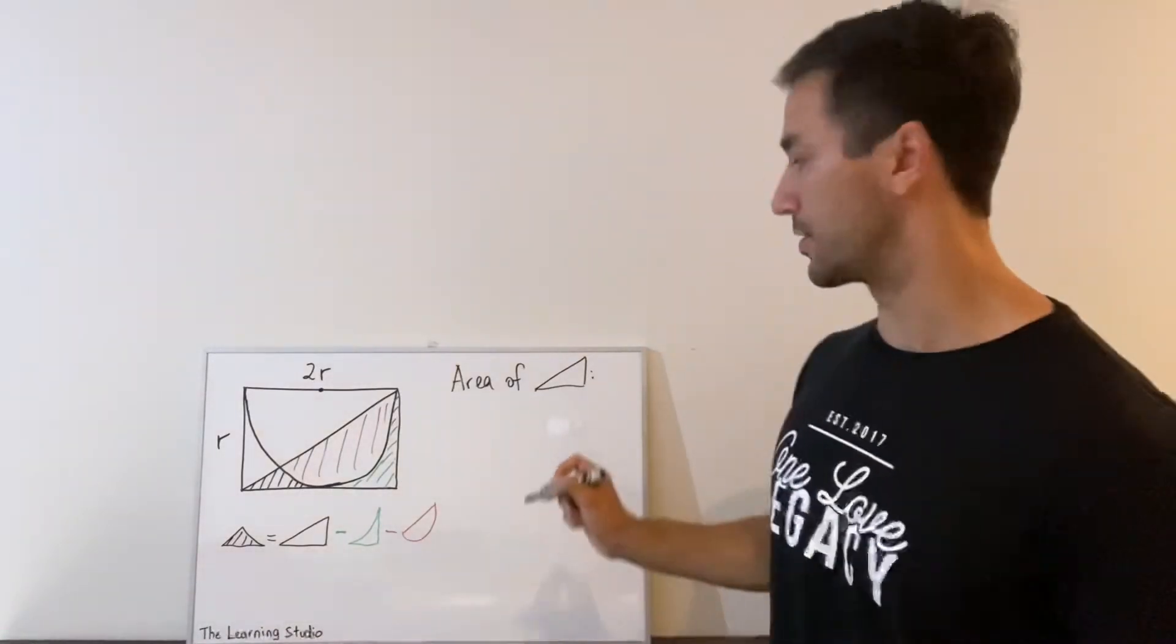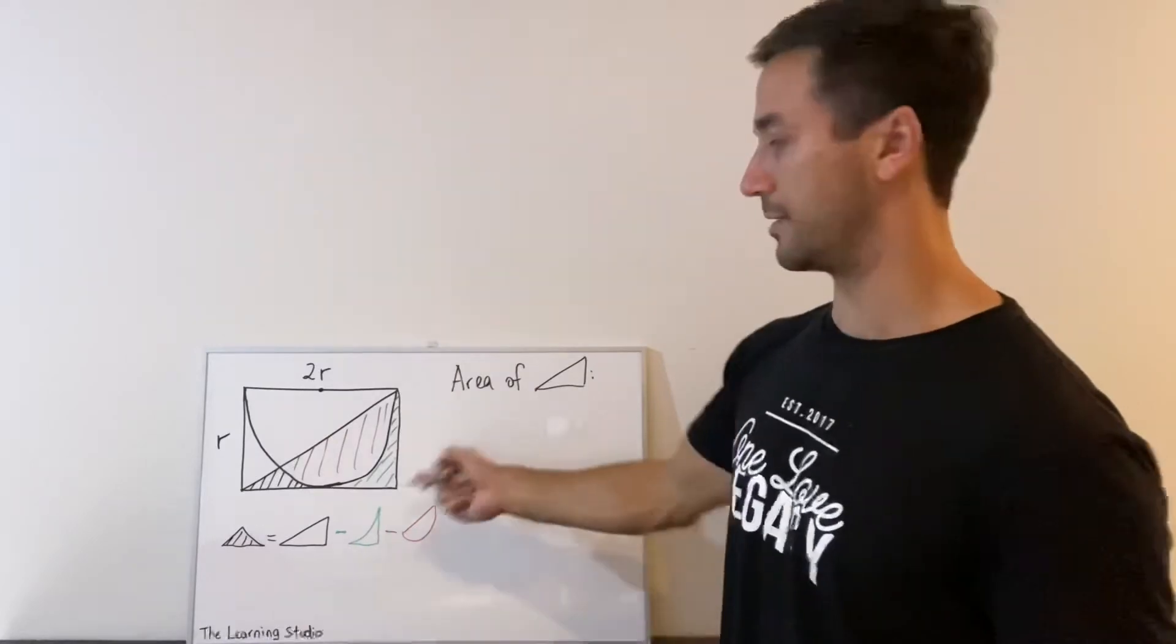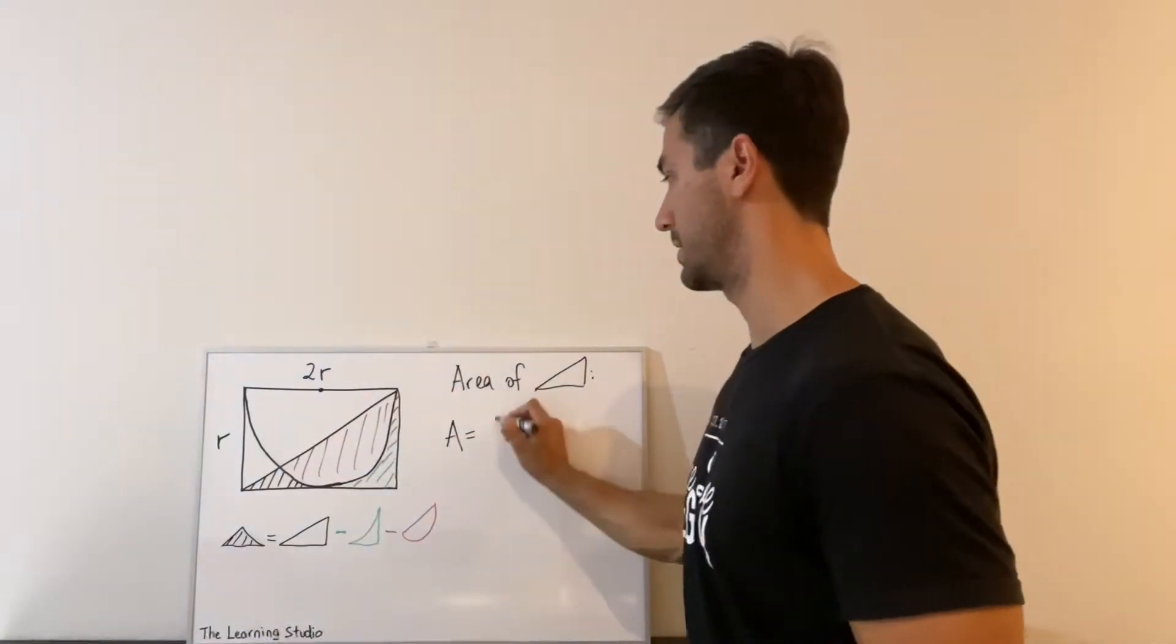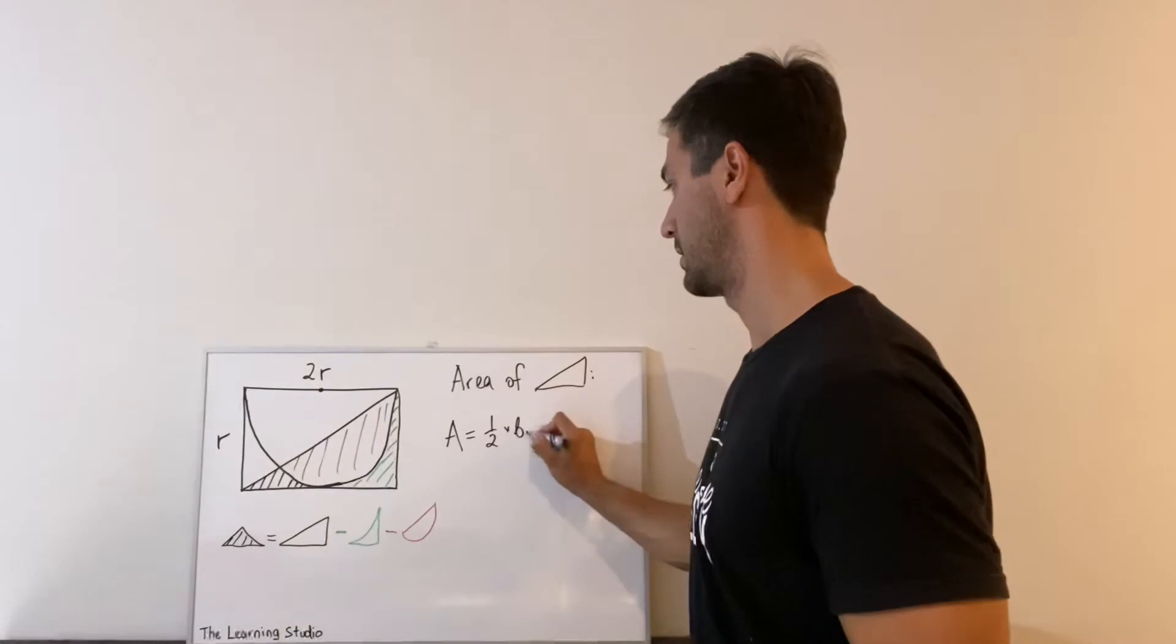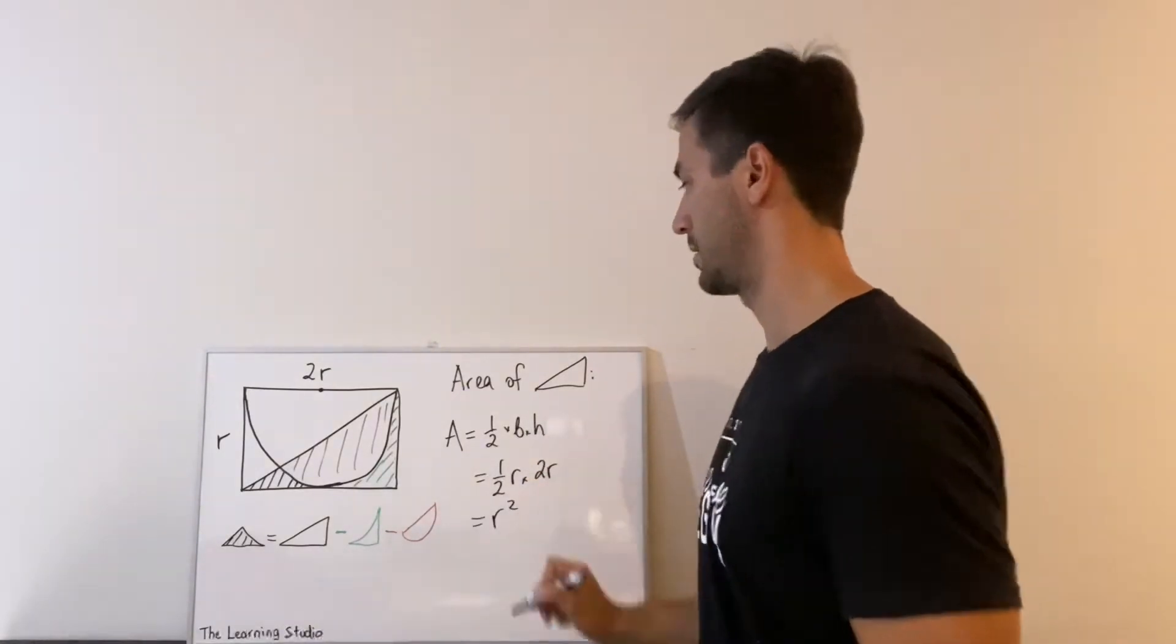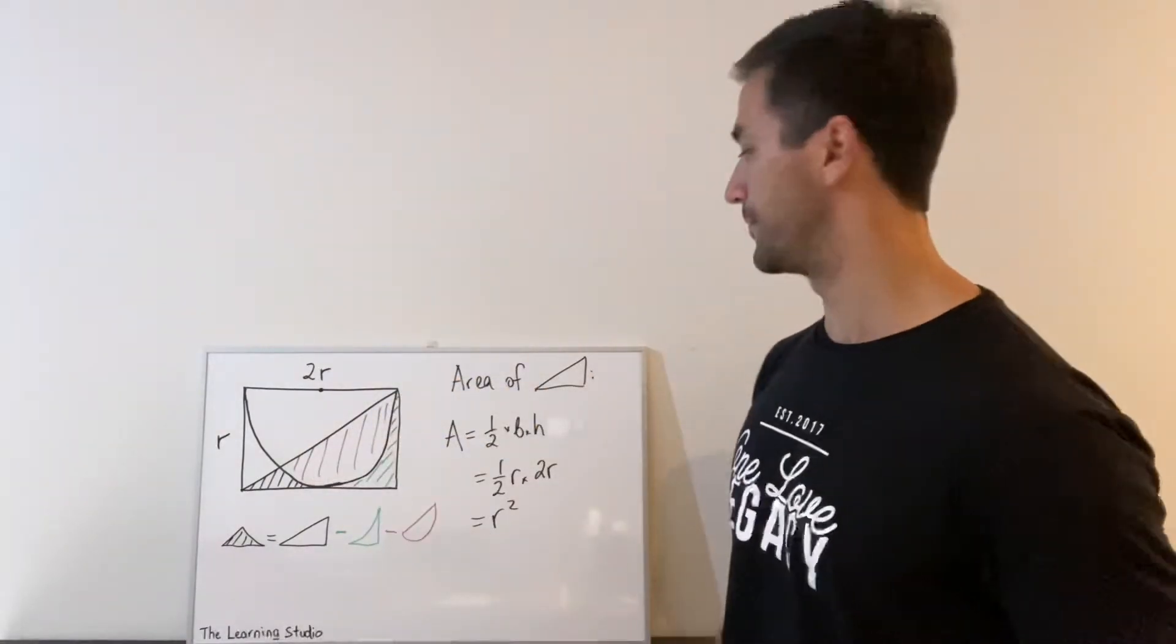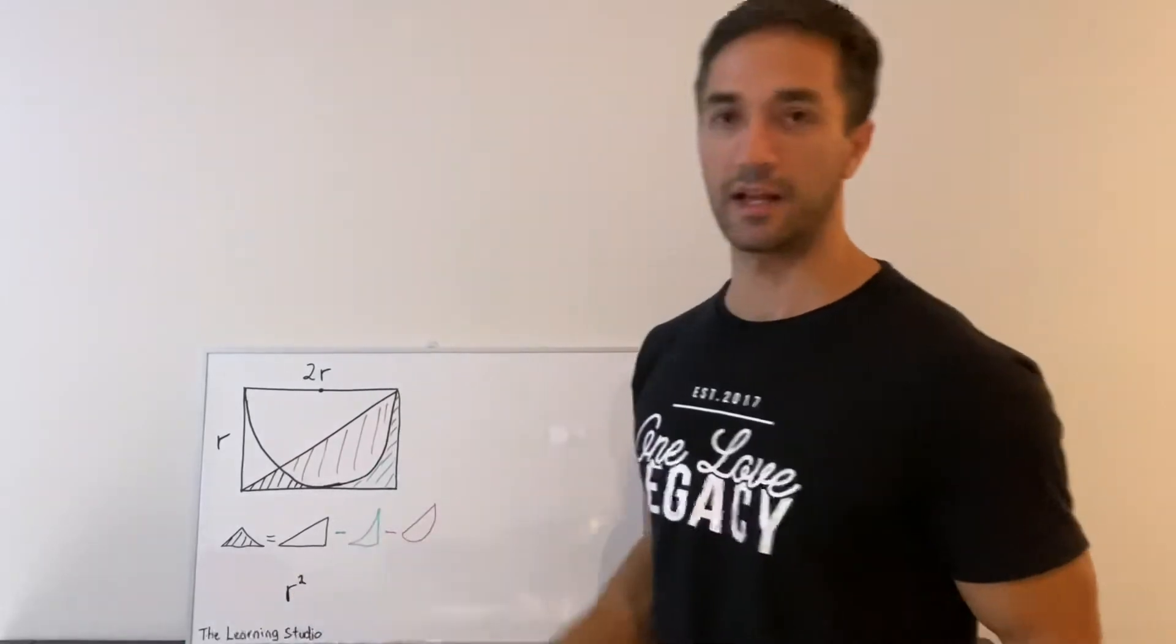So the area of the triangle is just half base times height, and we know both the base and perpendicular height. So we get this. And we find that the area of this triangle here is r squared.